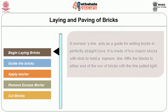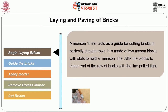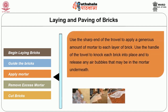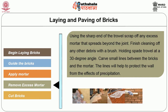For laying and paving of bricks: begin by using a mason's line, which acts as a guide for setting bricks in perfectly straight rows — it is made of two mason blocks with slots to hold the line, attached to either end of the row with the line pulled tight. A story pole is a strip of wood acting as guide for laying bricks; use a pencil to mark the height of each course including mortar joints. Apply mortar using the sharp end of a trowel, then knock each brick into place with the handle to release air bubbles. Remove excess mortar by scraping with the sharp end of the trowel, clean debris with a brush, and hold a spare trowel at a 30-degree angle to score small lines between bricks and mortar, which help protect the wall from precipitation.